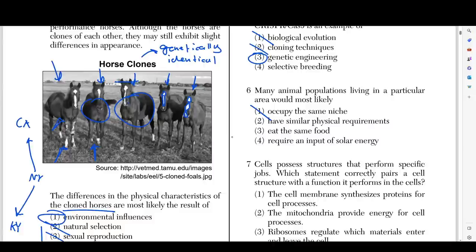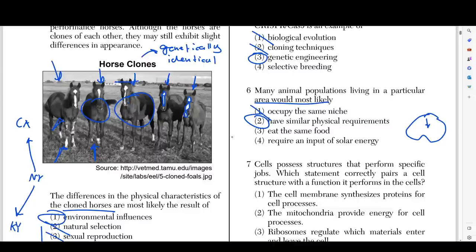If they don't have different niches, they'll compete and one will probably die out. Obviously it's going to be choice number two — they're going to have similar physical requirements. If you're living in a particular area, say next to a pond with fish, even though they have different niches and eat different things, they still need food, oxygen, and a specific pH level. They're going to have the same physical requirements because they're all in a similar environment. If they all live in a jungle, they're all going to need oxygen, space to live, food, and tree branches to build nests.